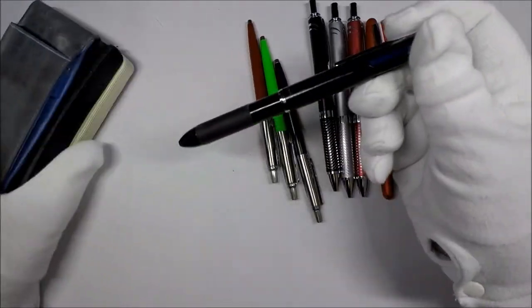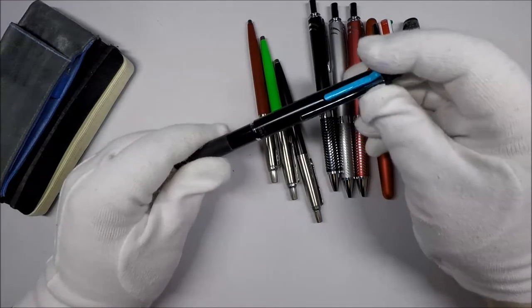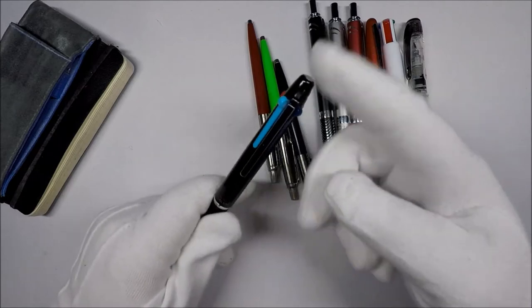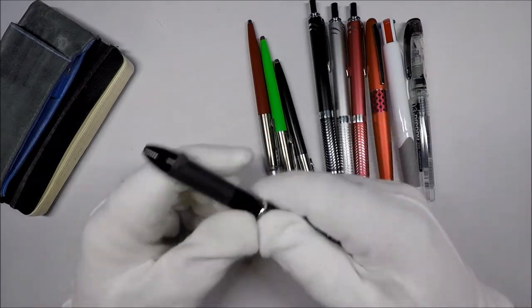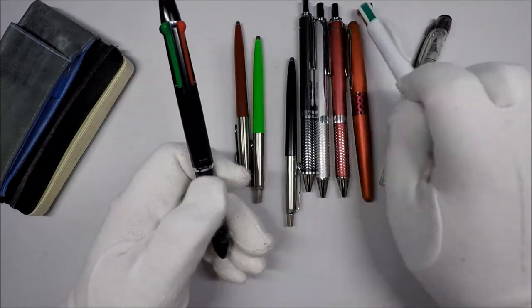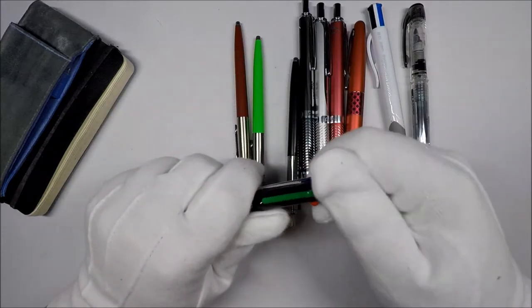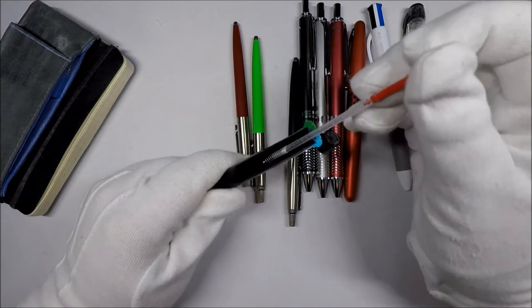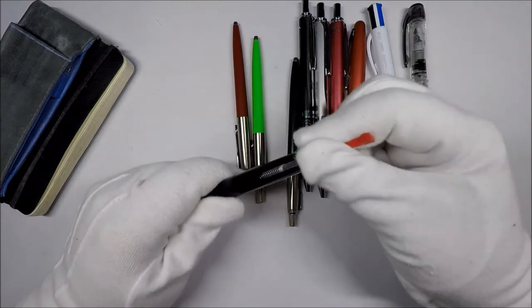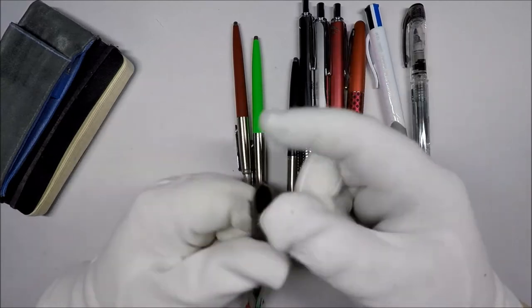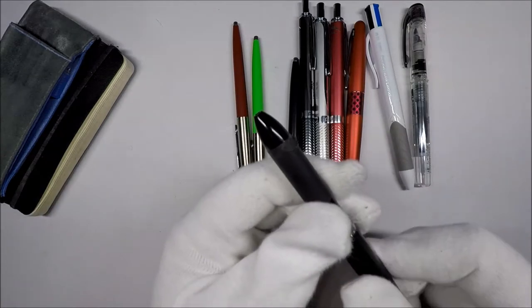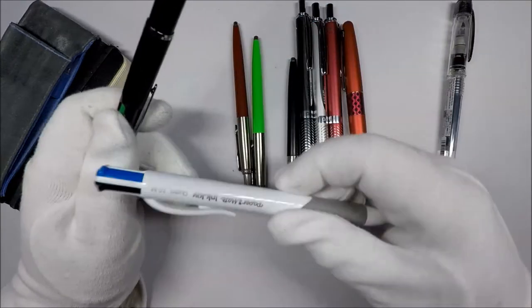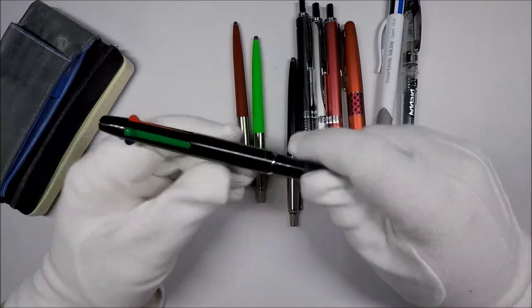The last thing is this is a Pilot Coletto, and this is a Hi-Tec-C. This is a Coletto 4, which means it takes four different colors of ink. You can get a two, three, four, or five. The deal with this is it's a multi-pen, very similar to the Inkjoy Quattro, with a couple of differences. You can easily swap out the ink if you want. You just basically have these little refills, and you can get them in a bunch of different colors. As you can probably tell from the noticeable wear on mine, I've used this pen a lot.